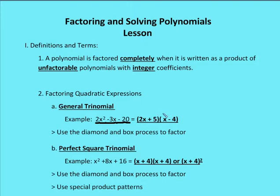So the trinomial has common factors 2x plus 5 and x minus 4. Now it is factored completely because it's written as a product of unfactorable polynomials with integer coefficients: 1, 4, 2, and 5.